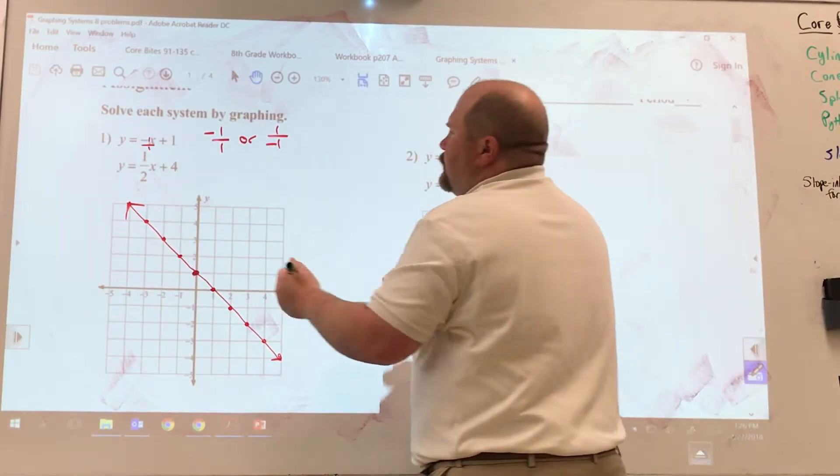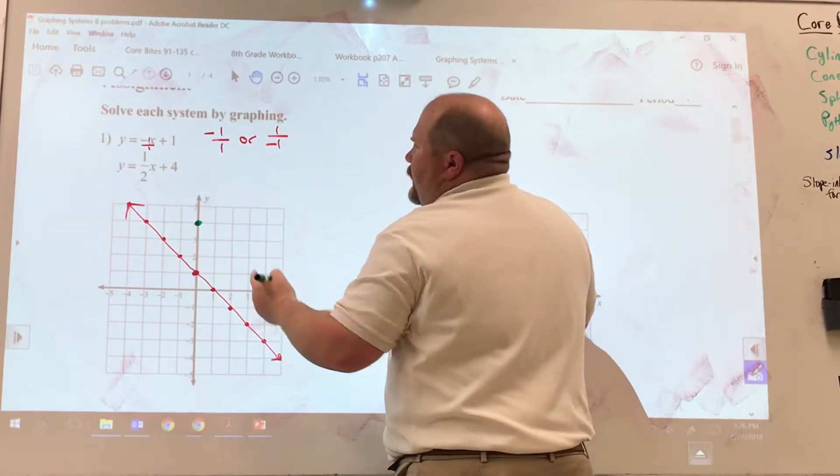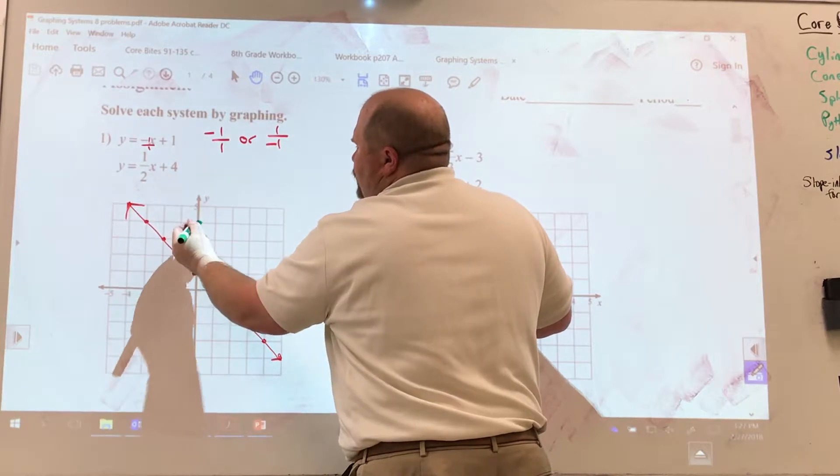If I do the opposite way, it should continue to line up with that existing line. So if I go up one and left one, up one, left one, up one, left one, indeed it does continue that same exact line, and that's what we want to see. So that is the first equation. The second equation, we're going to start at positive four, so that is here. And it says that we're going to go up one, right two.